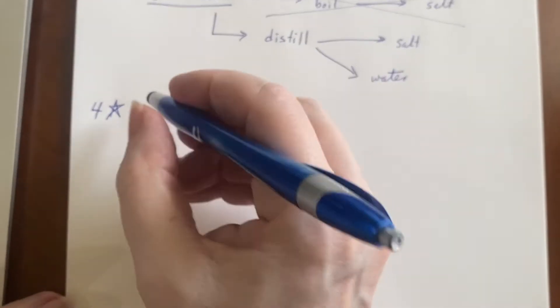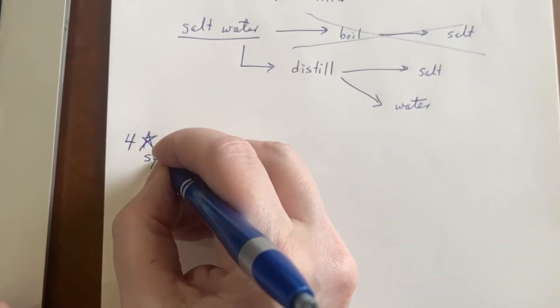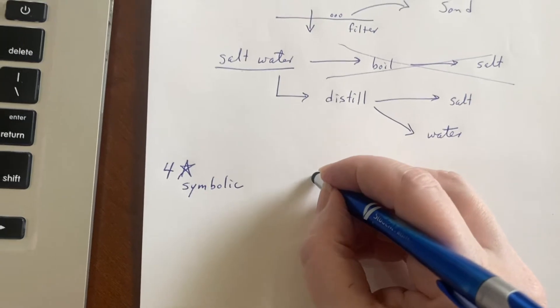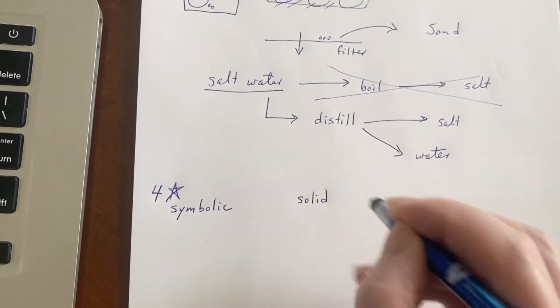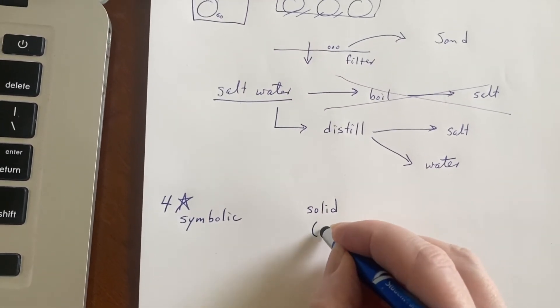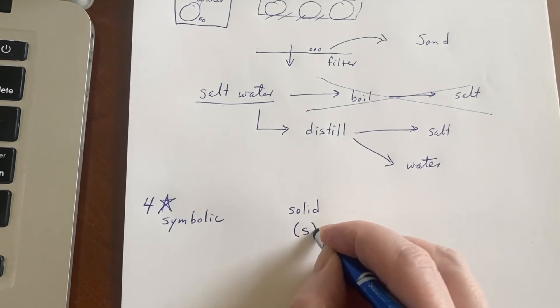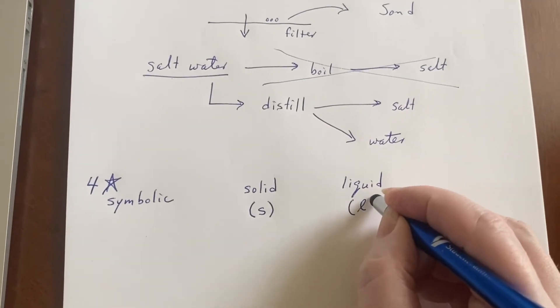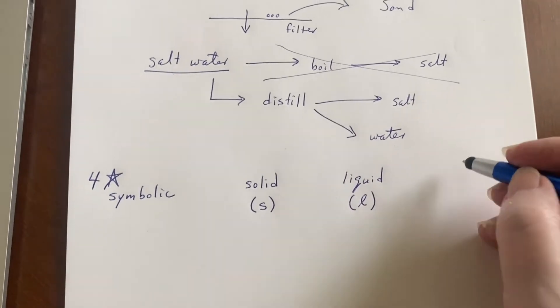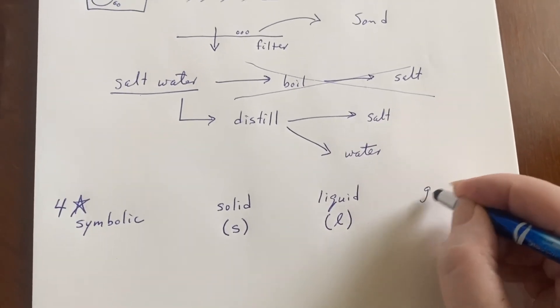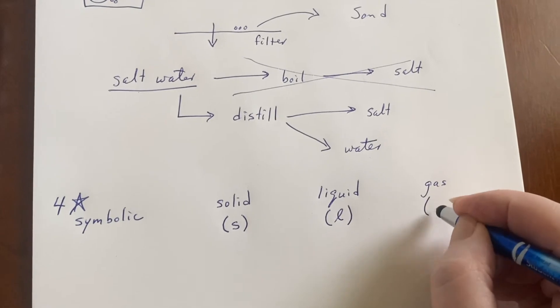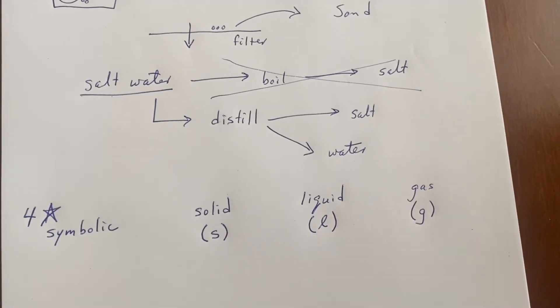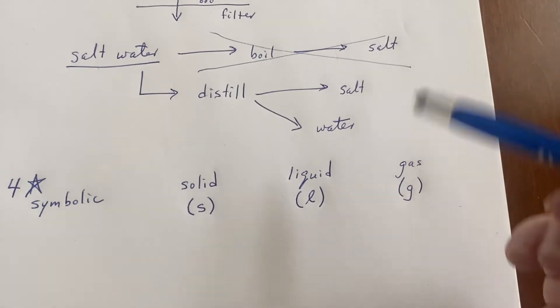We like to view things symbolically. So what's the descriptor for a solid? When we write it down we don't want to write the whole word, so we'll put it in parentheses and put an S. If it's a liquid we'll put an L. Now you notice I use a script L there because otherwise it might look like a one. Or it could be a gas and we'll use G for that.